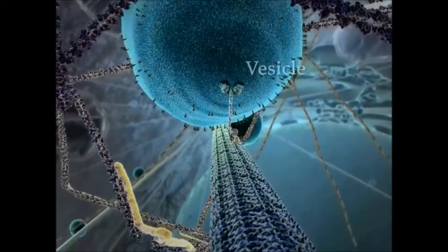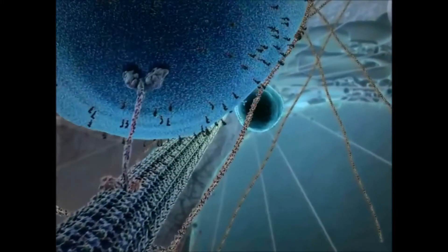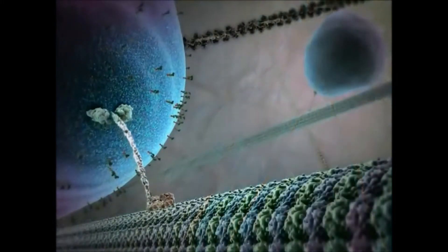Today, let's explore axonal transport inside a motor neuron. It is the intracellular transport of materials and information between the cell body and the axon, which are located on opposite ends of the neuron.